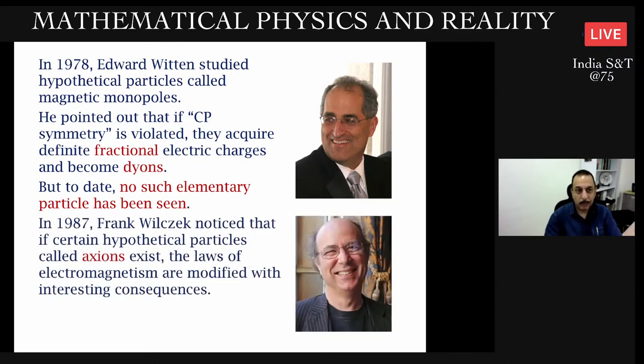To date, no monopoles have been seen in nature, nor have any dions, nor have particles with fractional electric charge been seen - at least not the kind of fractions he was proposing. Some years after Witten's work, Frank Wilczek, who has a Nobel Prize for a completely different piece of work, noticed that if certain hypothetical particles called axions exist, then the laws of electromagnetism are modified with interesting consequences.